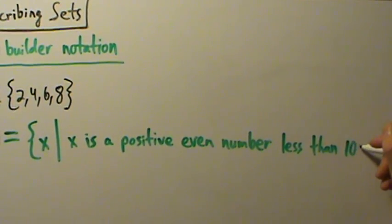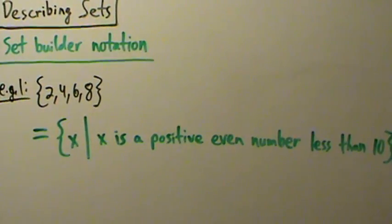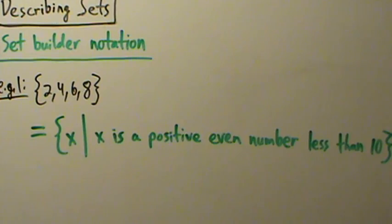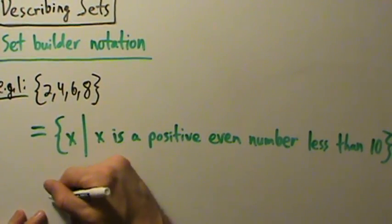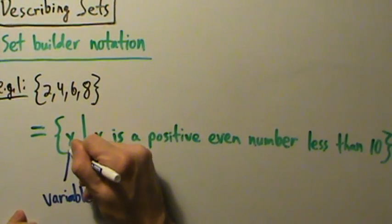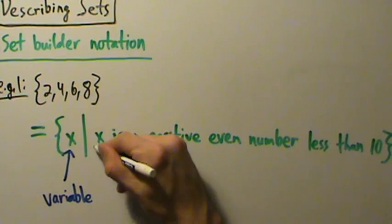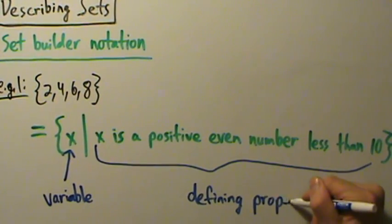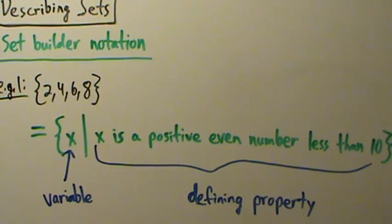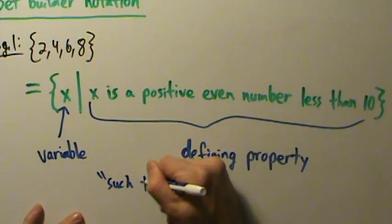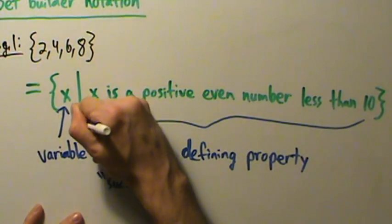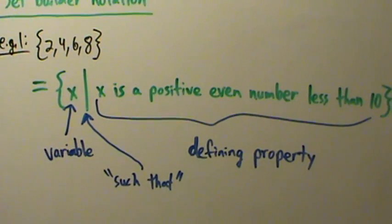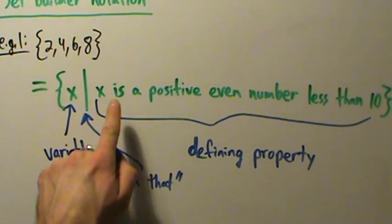There are a few different ways of describing this, but let's talk about what's going on. In set-builder notation, no matter what kind of set you're describing, you always have two parts: first is the variable name — x just represents any element in the set — and then the defining property after the 'such that.' So the set {2, 4, 6, 8} can be described as: the set of all x such that x is a positive even number less than 10.